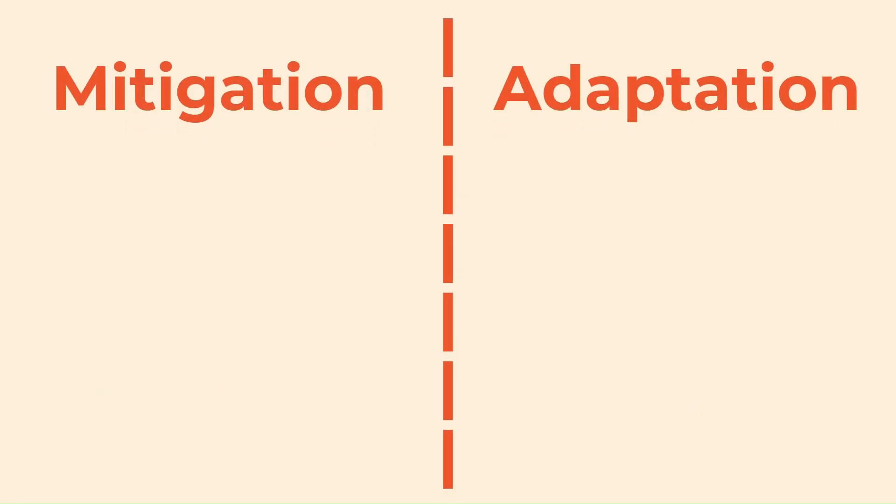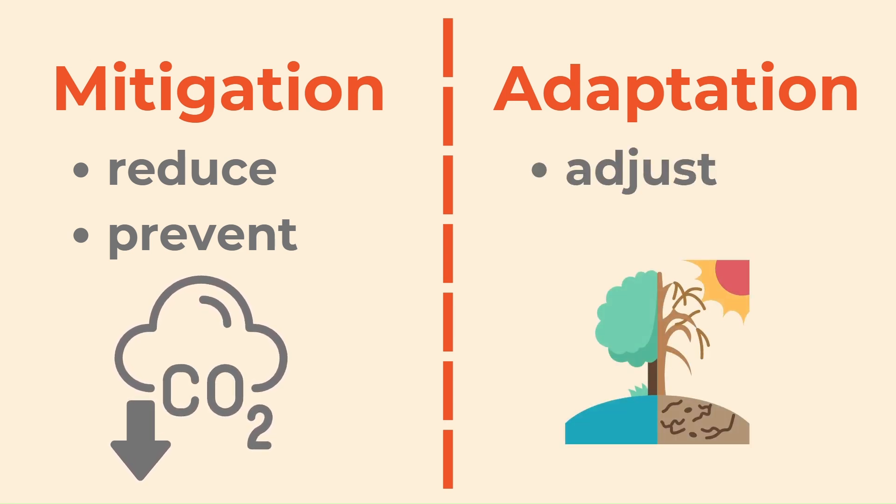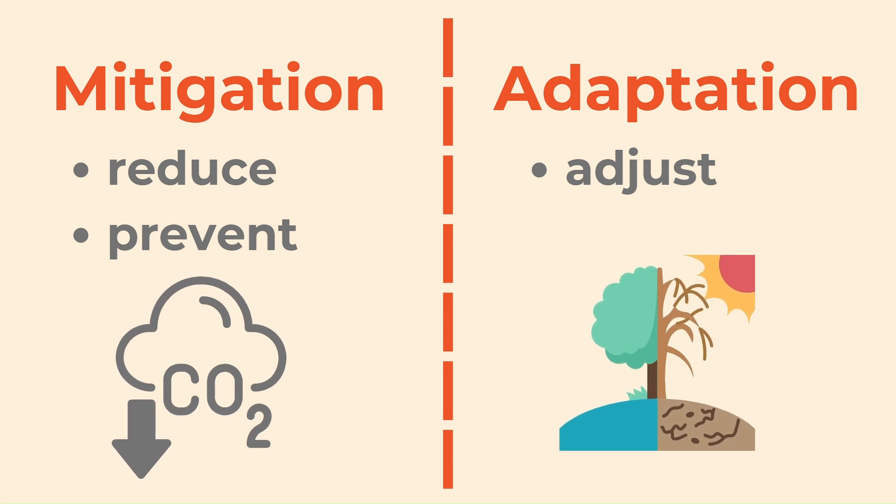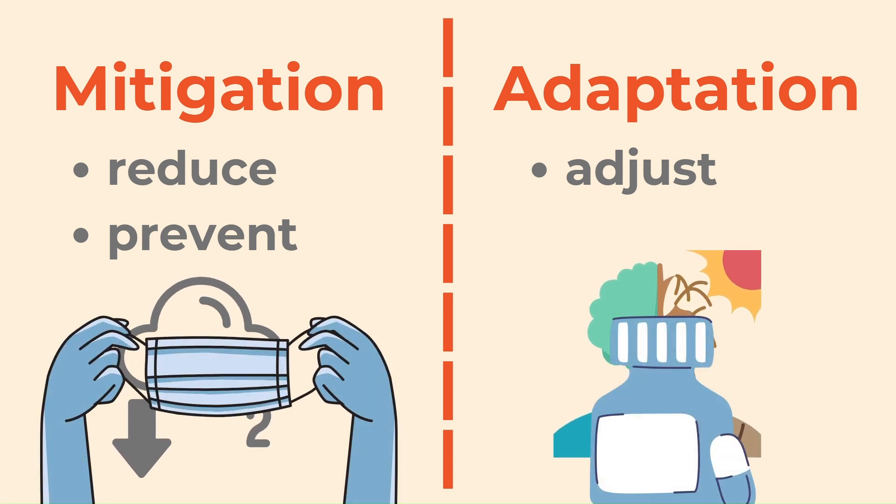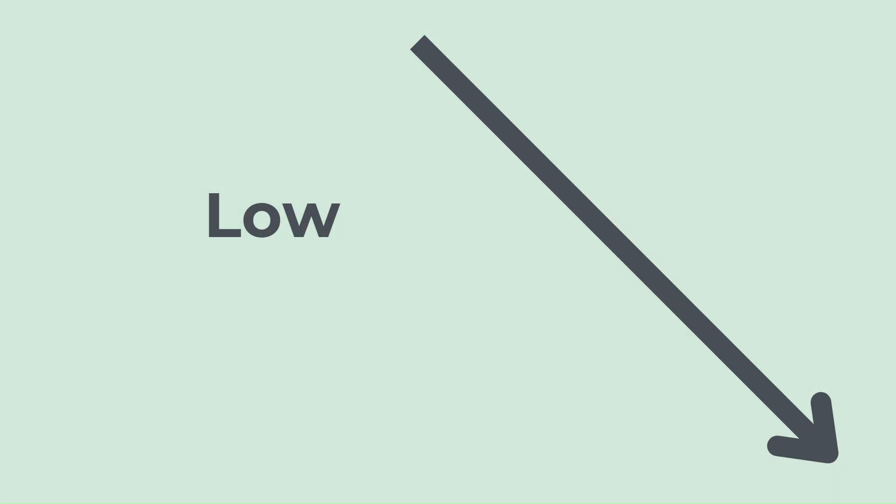There are two types of challenges: mitigation and adaptation. Mitigation refers to actions to reduce or prevent greenhouse gas emissions. Adaptation refers to the process of adjusting to actual or expected climate and its effects. It's a bit like prevention and cure. Depending on the choices made, each scenario will present a high or low level of challenges for mitigation and adaptation.